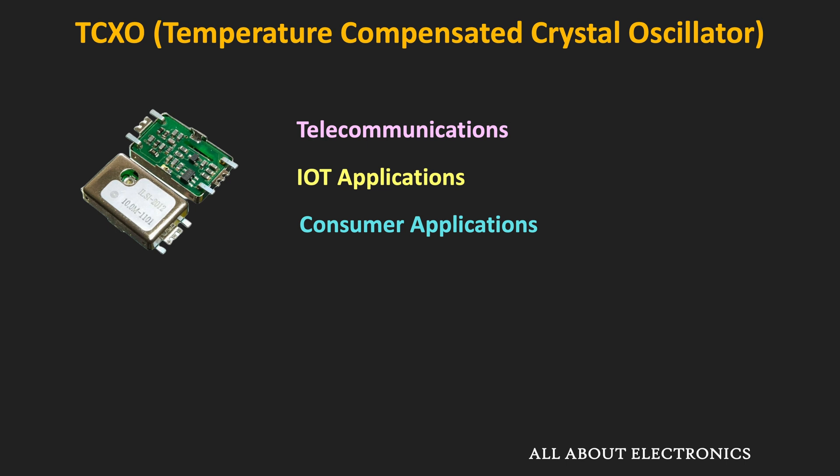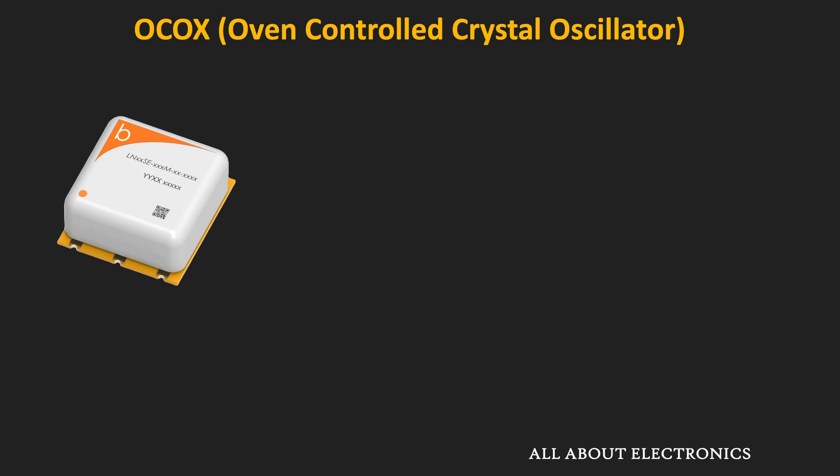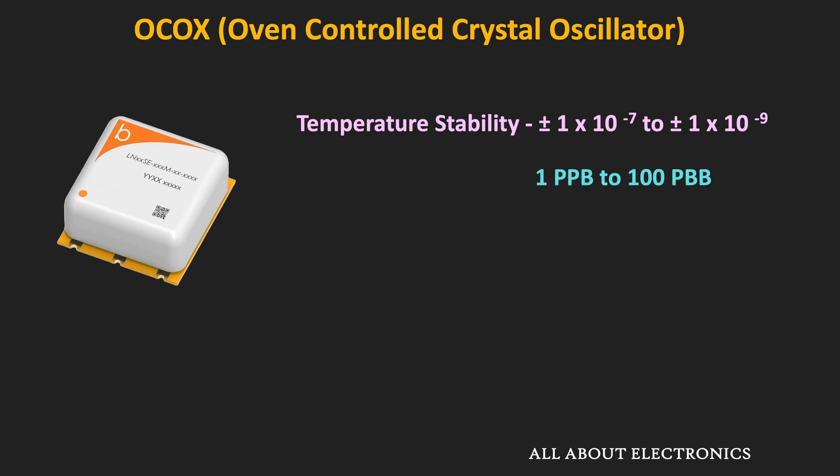Some applications demand even higher temperature stability than TCXOs. In such applications, oven-controlled crystal oscillators — OCXOs — are used. As the name suggests, in this type of crystal oscillator the temperature of the crystal is controlled with the help of a mini internal oven. OCXOs provide very good temperature stability — not in parts per million like TCXOs, but in parts per billion, ranging from 1 ppb to 100 ppb.